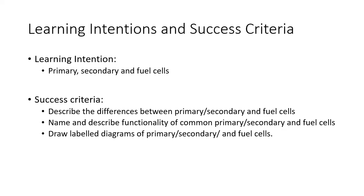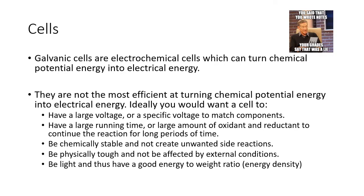Generally, we understand that galvanic cells are electrochemical cells which can turn chemical energy into electrical energy. But they're not very good at it — they're not the most efficient. Ideally, you would want a very large or specific voltage, a large running time or a large amount of oxidant and reductant to continue the reaction for long periods of time. You want it to be stable, without side reactions, physically tough, and light with a good energy density.